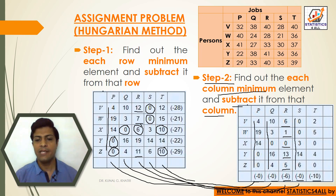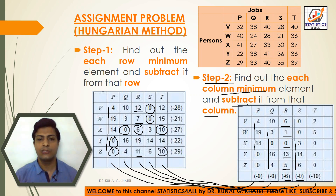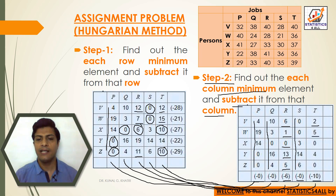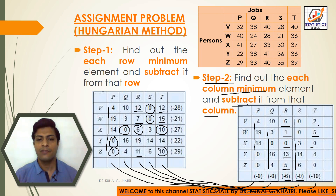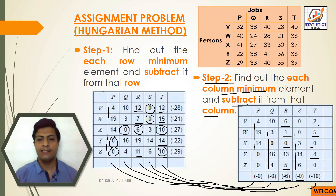For the fifth column, the minimum is 10, so: 12−10=2, 15−10=5, 10−10=0, 14−10=4, 10−10=0.